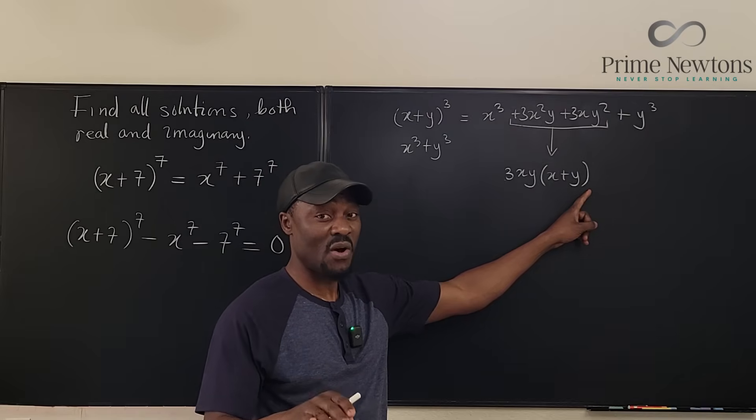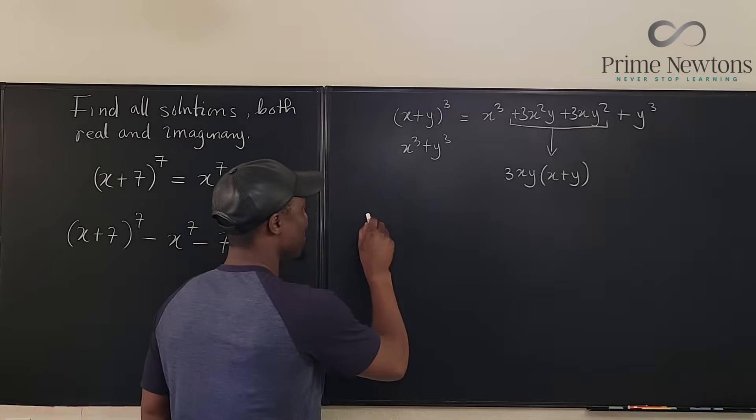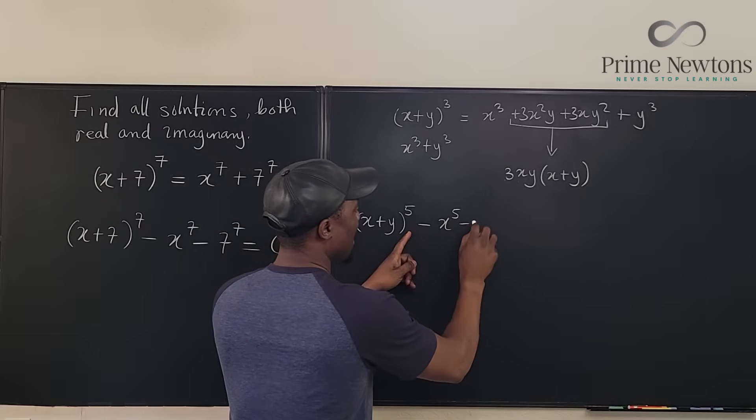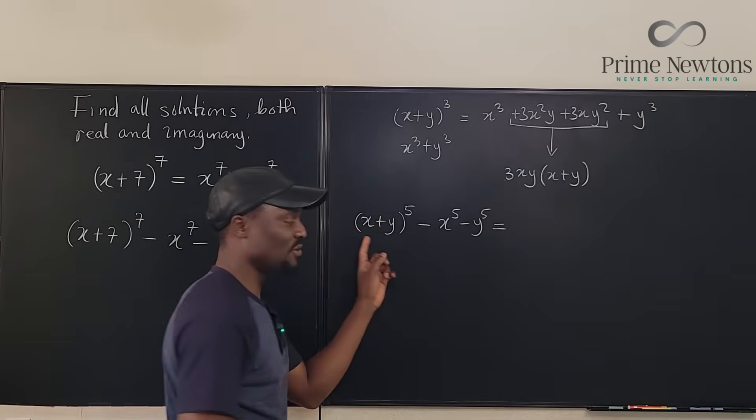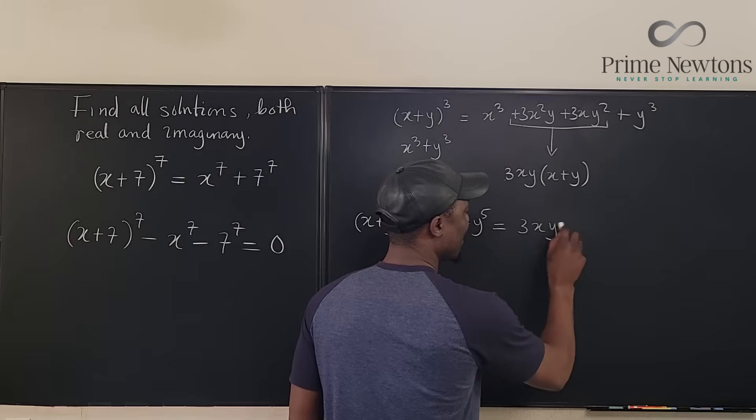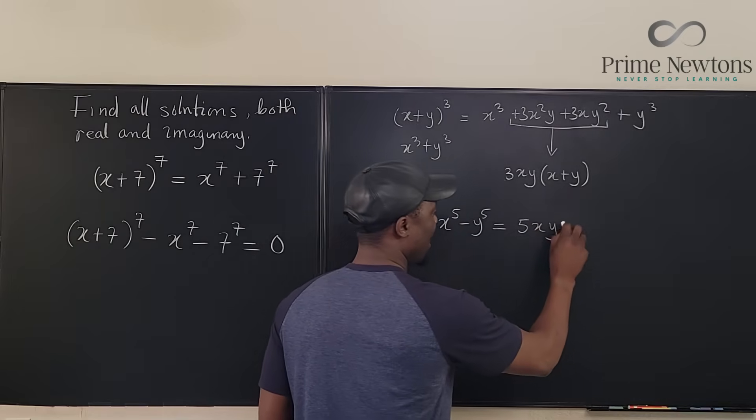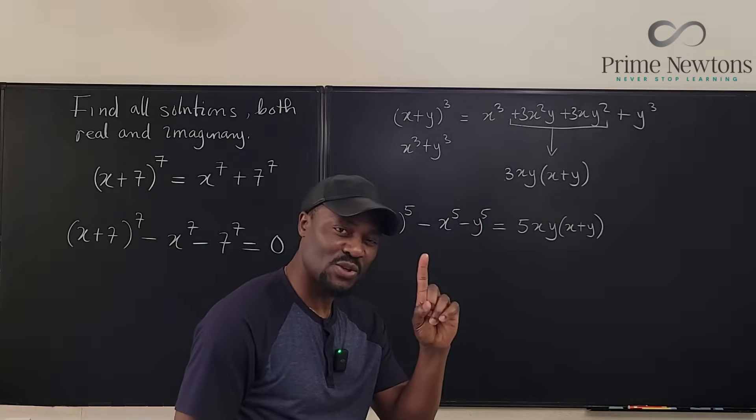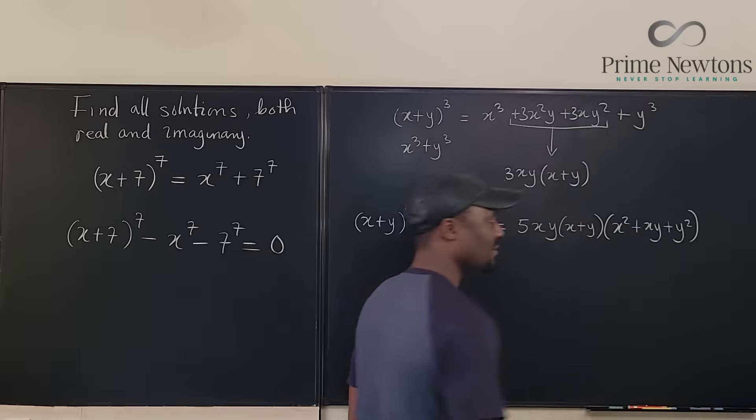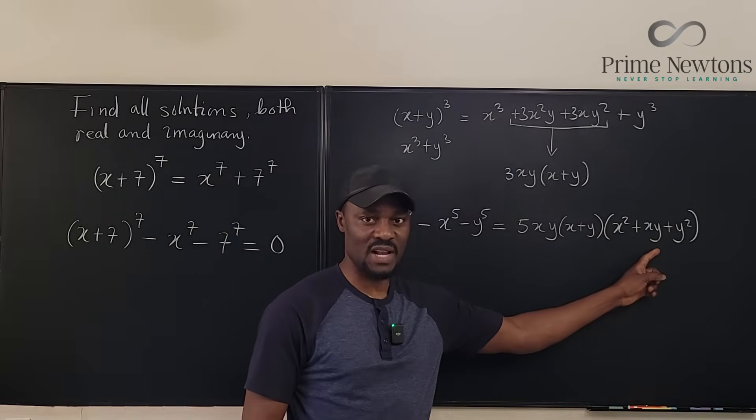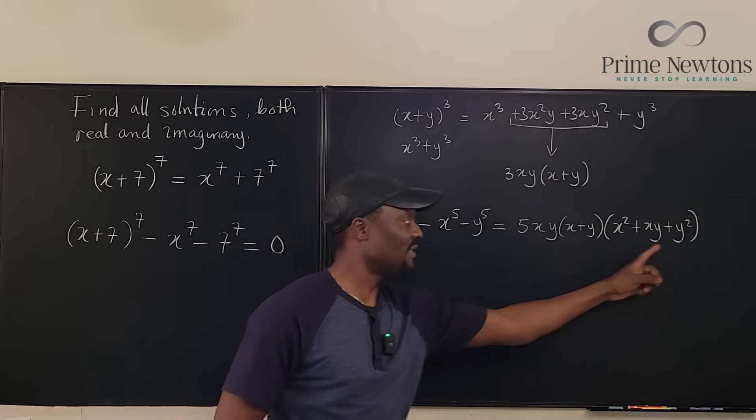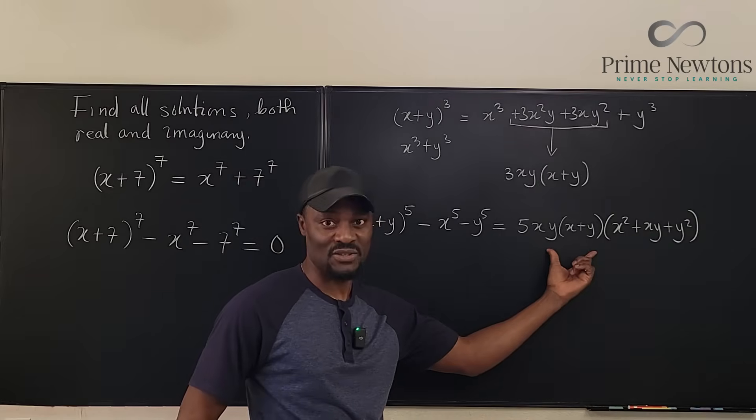Now, I want you to practice it and figure out what comes out. If you're dealing with (X + Y)^5 and you're subtracting X^5 and Y^5, what's going to come out of this is going to be very similar to this. You're just going to have an addition. What you're going to have will be 5XY. You're going to have X plus Y and you're going to have one additional. It's going to be X^2 + XY + Y^2. Once the power goes to five, it becomes like this.